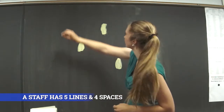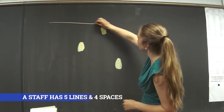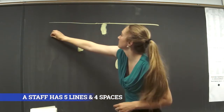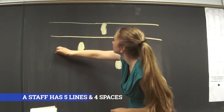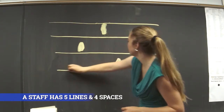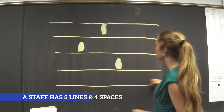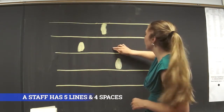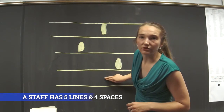I'm going to write it on the board so we can see it. So we have a line here and a space, line, space, line, space, line. We have these five lines and four spaces in between those lines.